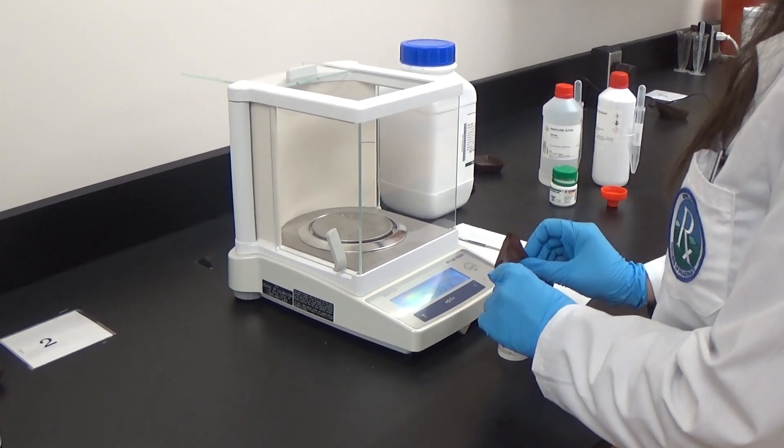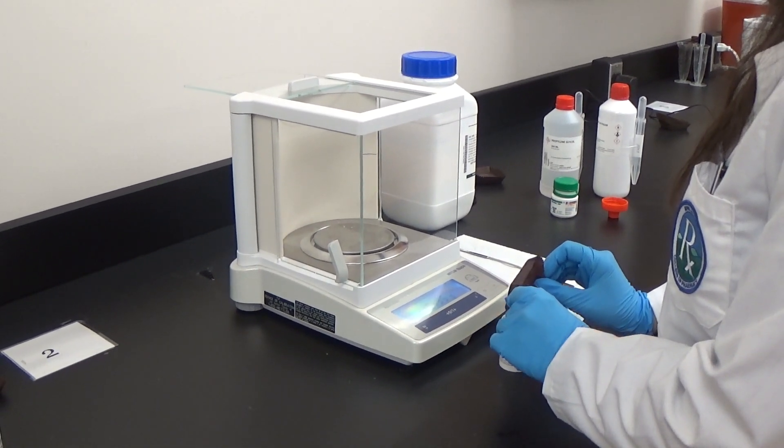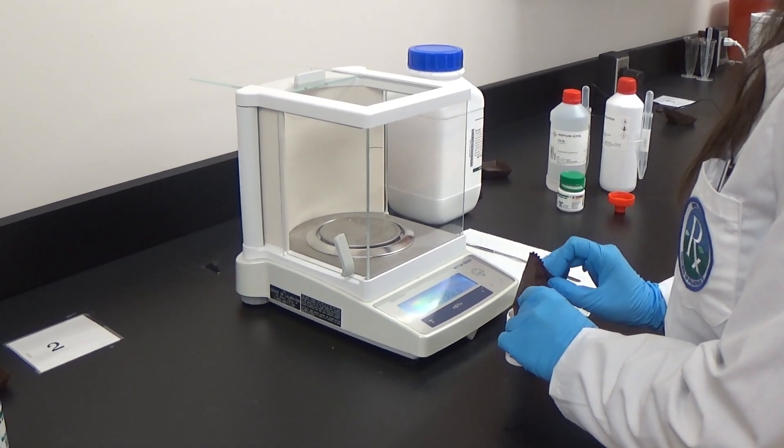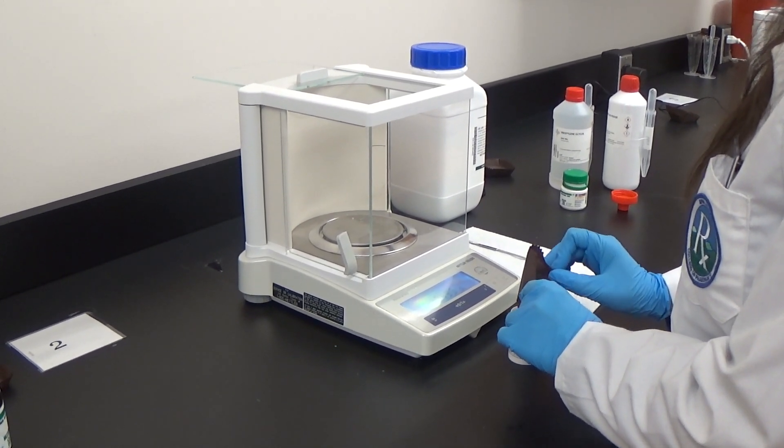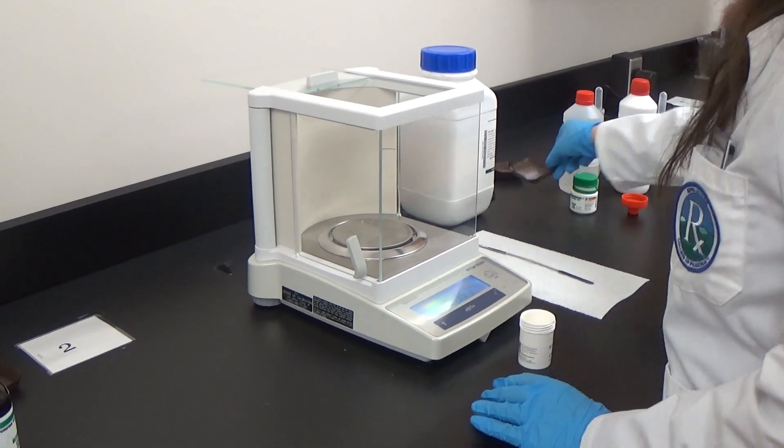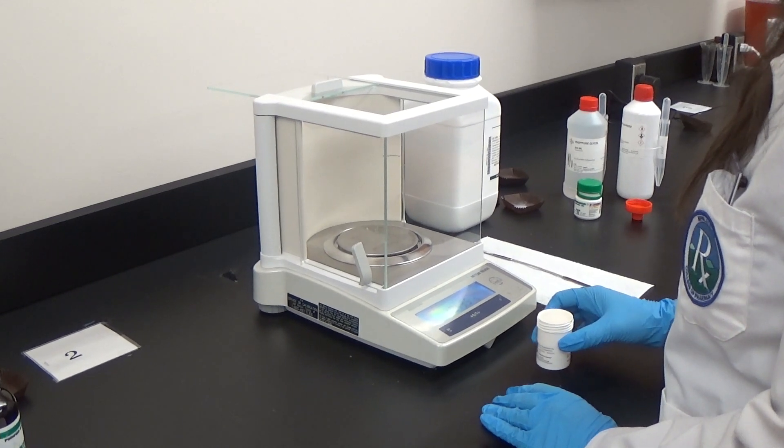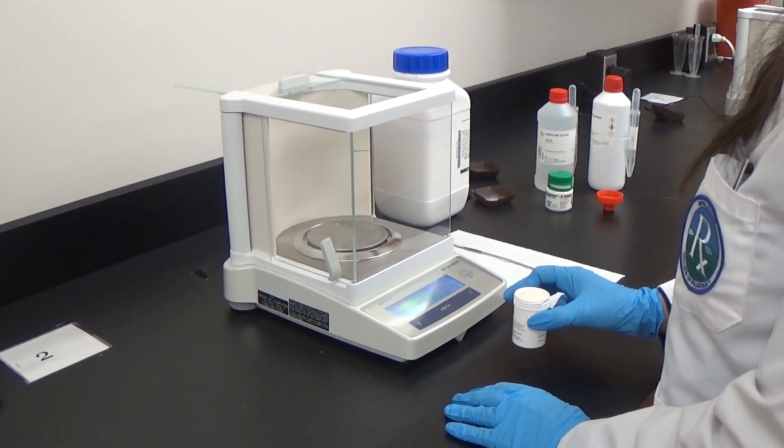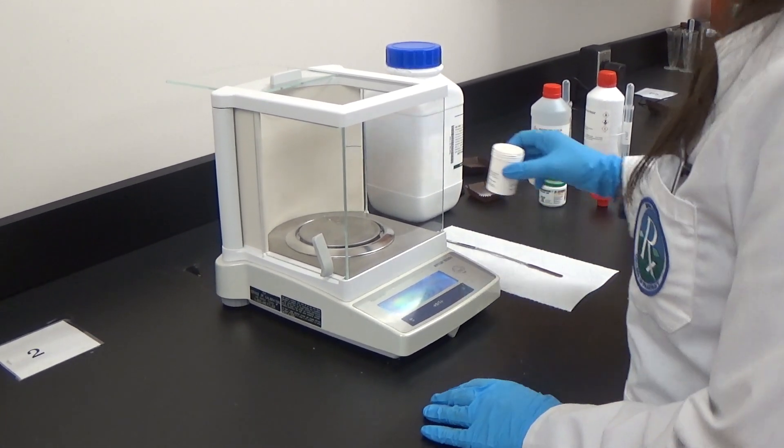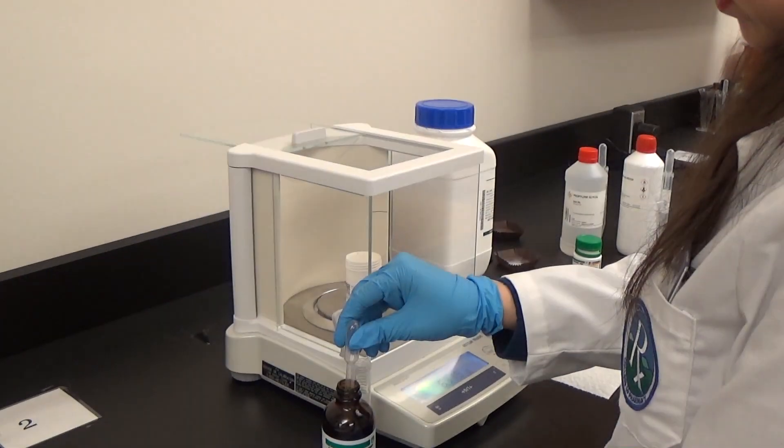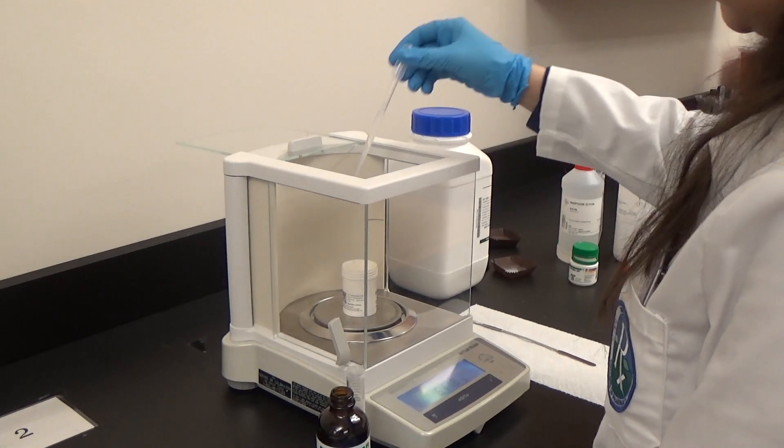Next, add carbomer 940 into the mix and swirl again for one minute. Finally, add sufficient water to the mixture to obtain the final weight.